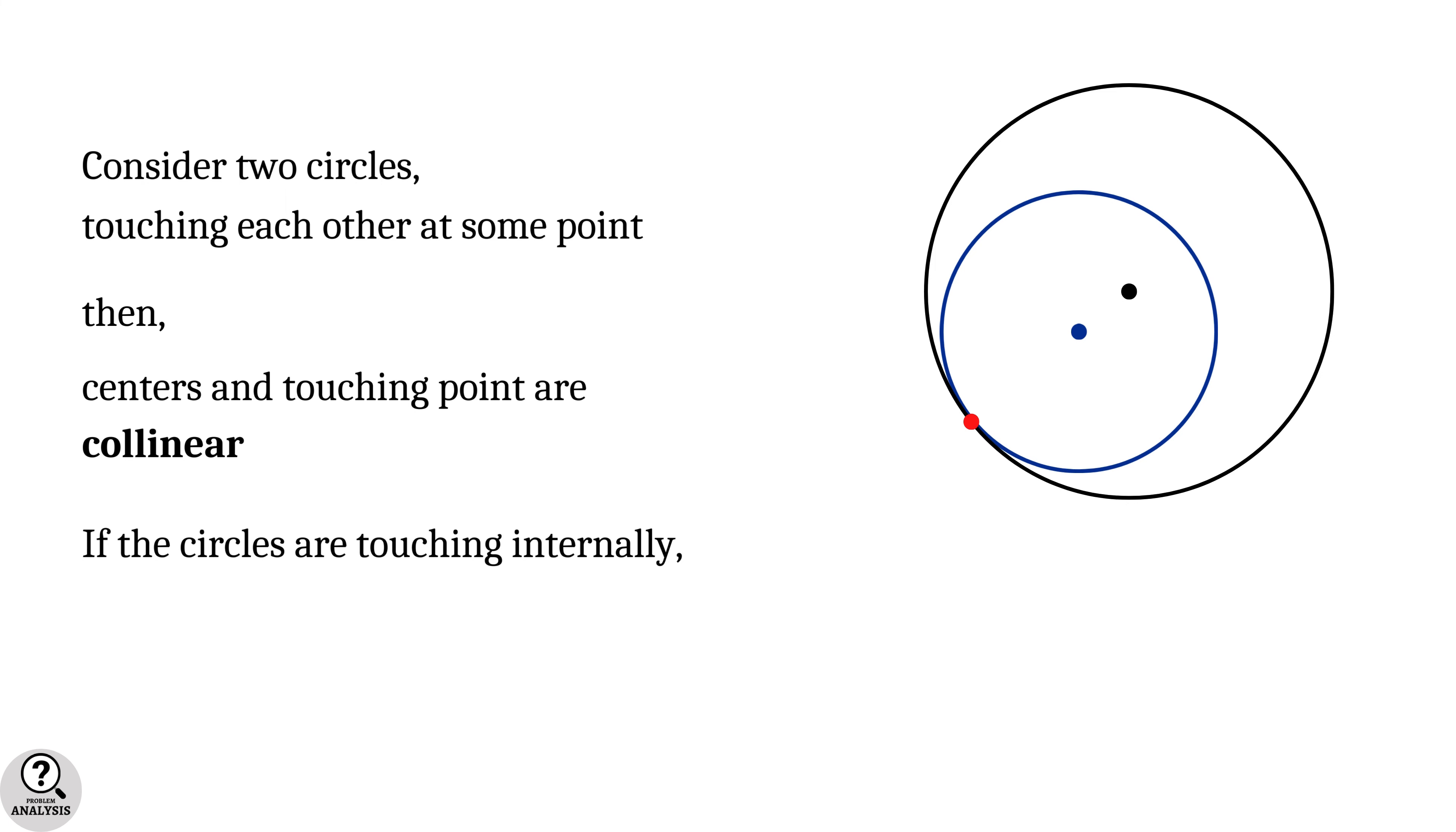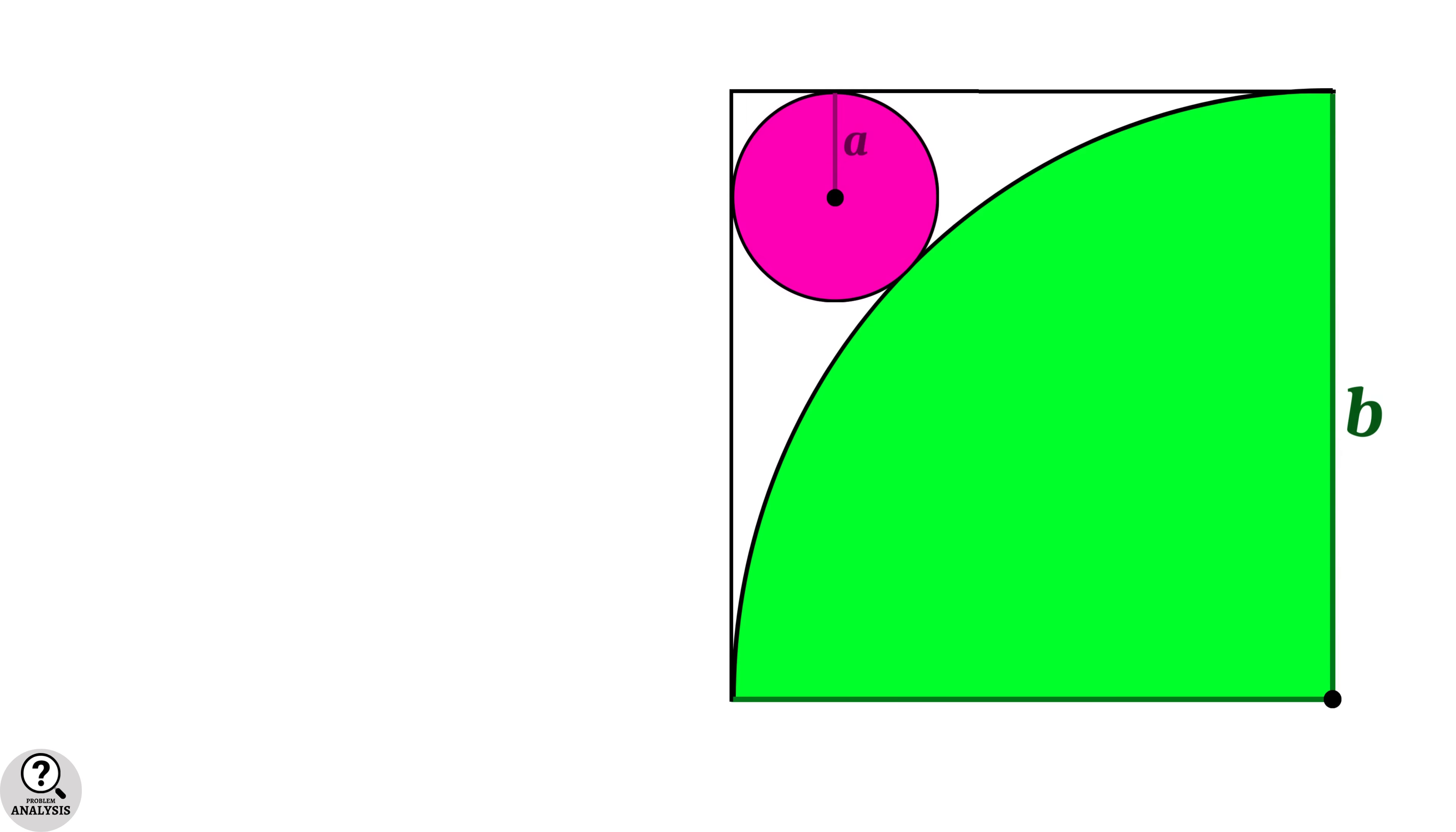That is, centers and their touching point are lying on the same line. Now come back to our problem and mark the touching point of the circles. Then by the property we discussed, the centers and the touching point are collinear, and this line is in fact the diagonal of the square. Now in this diagonal, this part is a radius of the green circle, so it will be b units, and these two parts are two radii of the pink circle.